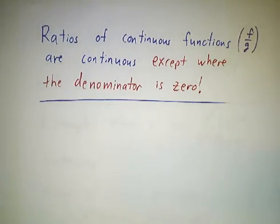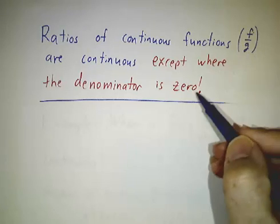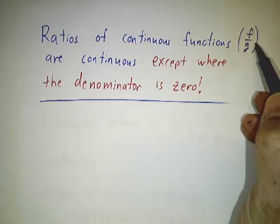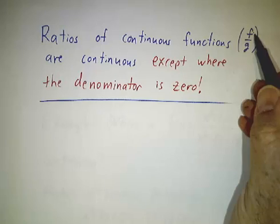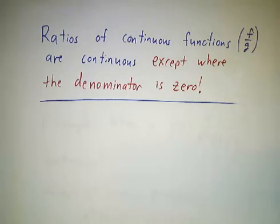Finally, we can consider ratios. If you've got two functions, f and g, the ratio is going to be continuous except where the denominator is 0, because if you change x a little bit, you only change f a little bit, you only change g a little bit, you only change the ratio a little bit.